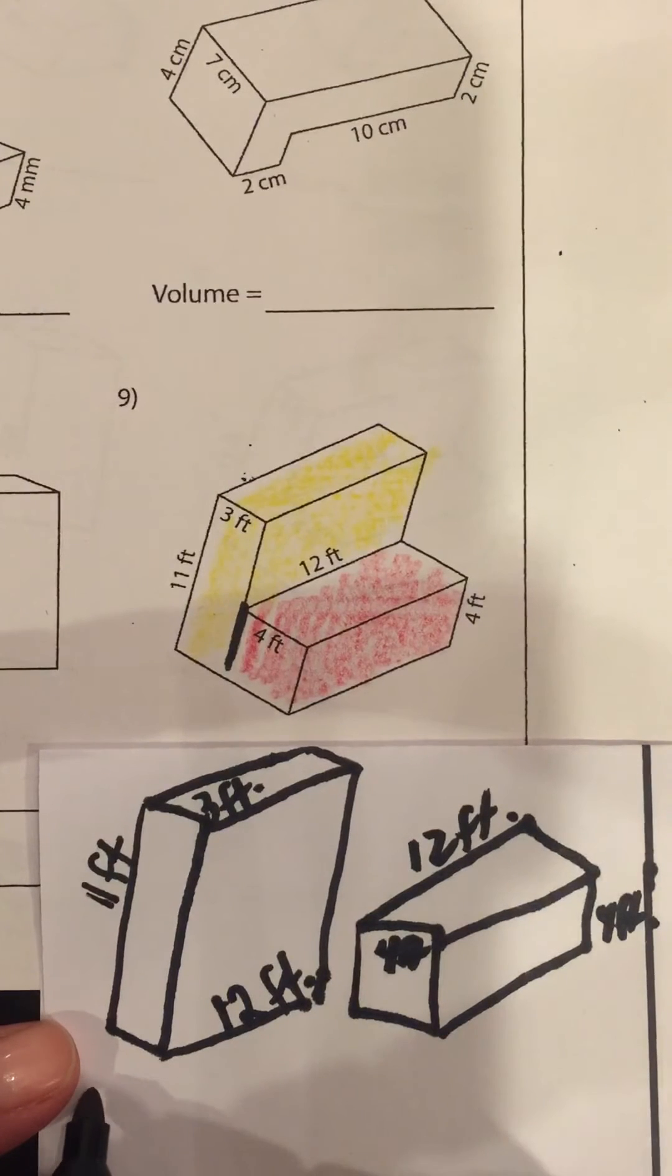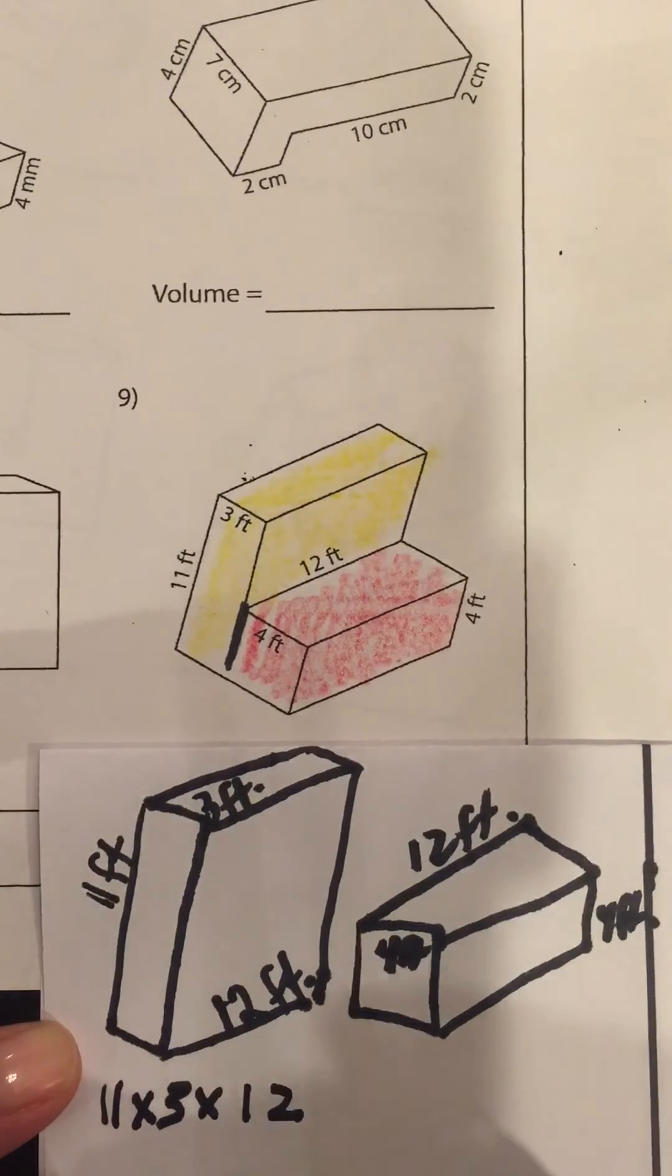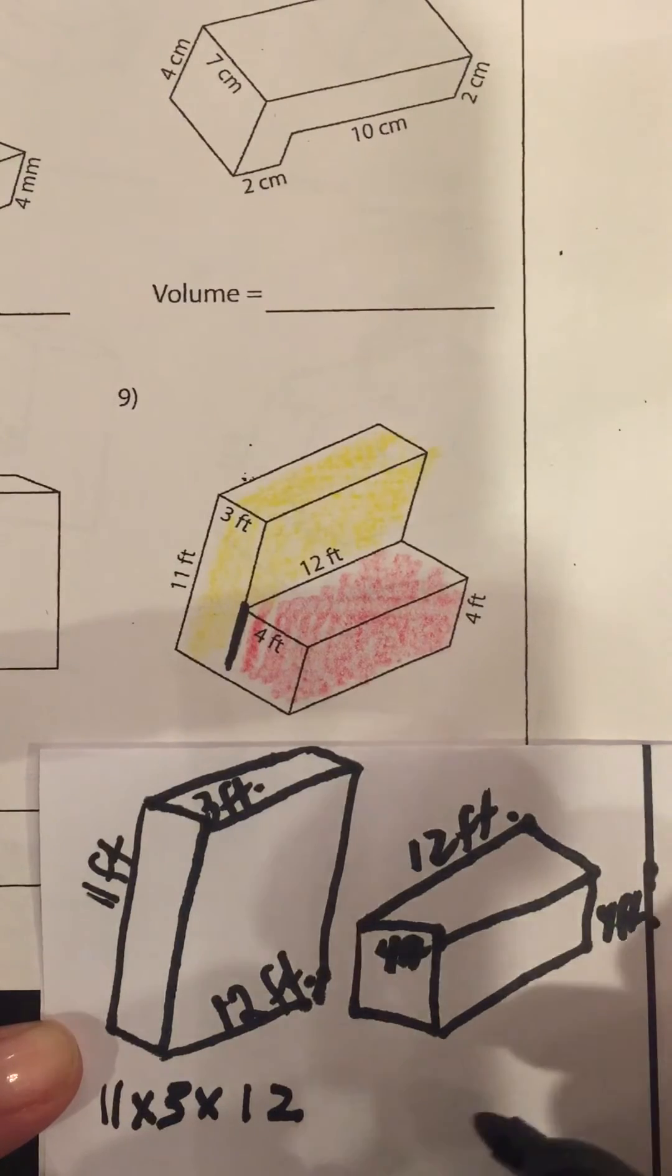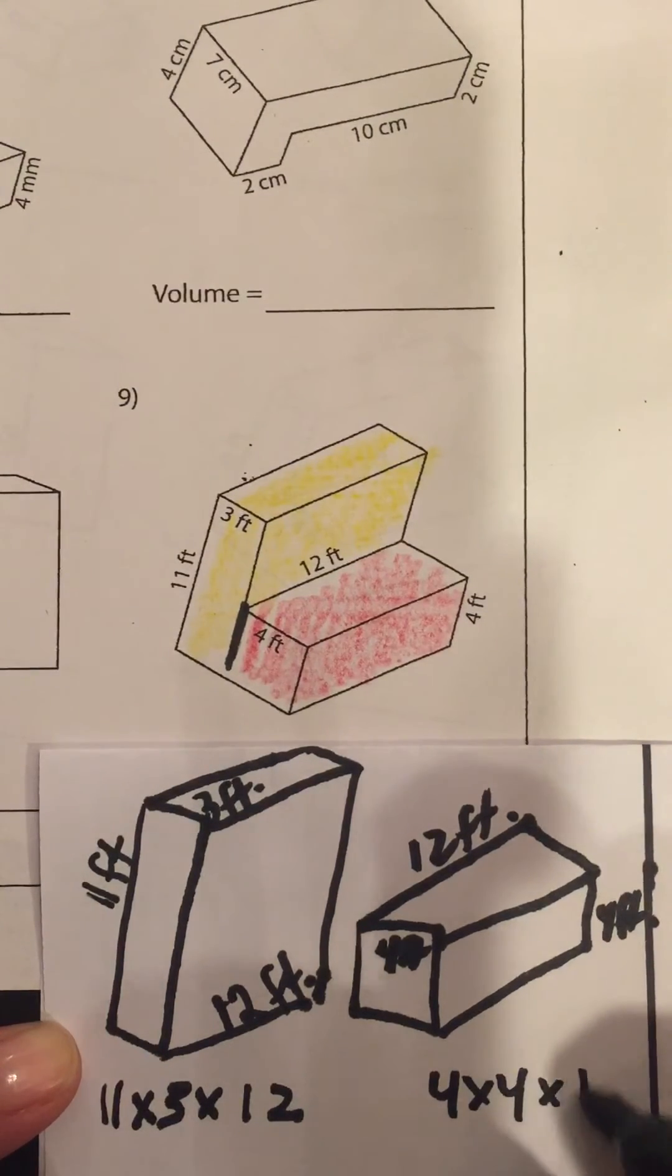All right, let's solve here. We have an 11 by 3 by 12, and over here we have a 4 by 4 by 12.